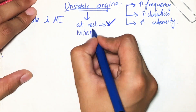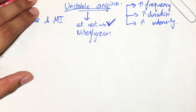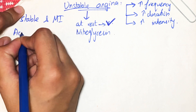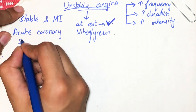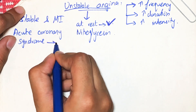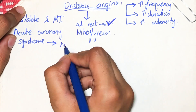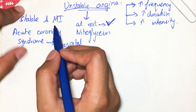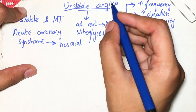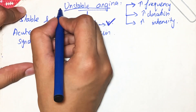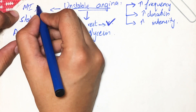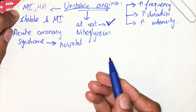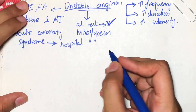Unstable angina is not relieved by nitroglycerin, which is normally used in stable angina. It is a form of acute coronary syndrome, which means the patient needs to be admitted to hospital. It is serious because unstable angina can progress to myocardial infarction, heart attack, and death, so you need to visit a hospital and get medicated.